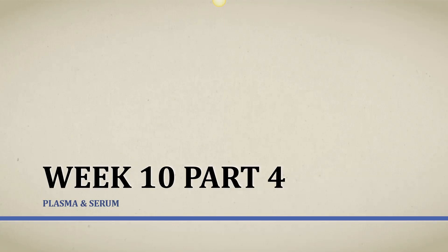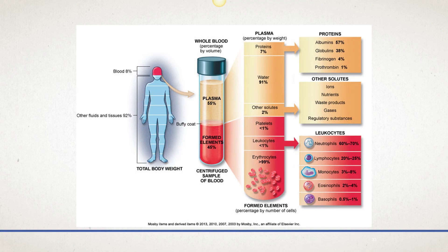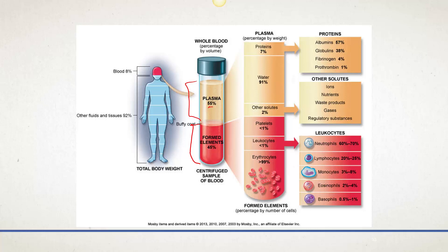Continuing on, we're going to talk about plasma and serum. We already talked about the formed elements. Now we're going to talk about the liquid component of the blood, which is approximately 55% of the blood volume. When we look at what's actually in plasma, about 7% of that is protein, 91% is water, and then there are other solutes as well.